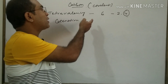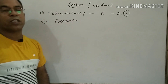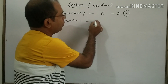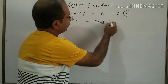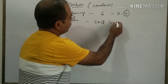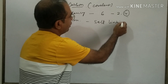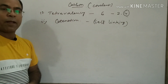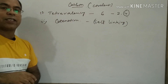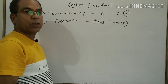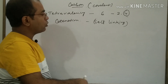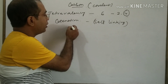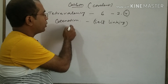The next point is catenation. Catenation means self-linking. Carbon has a very unique nature — it can link itself with its own atoms. This linking of carbon is called catenation.